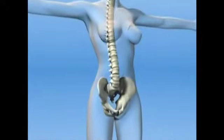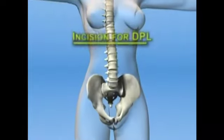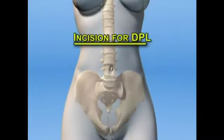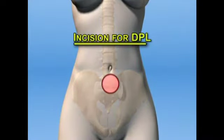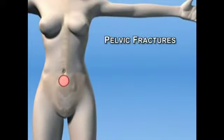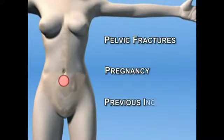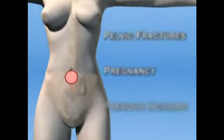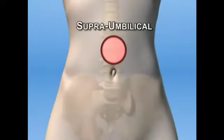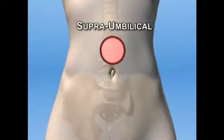The incision for a DPL is usually placed infra-umbilically. In the case of pelvic fractures, pregnancy, or previous lower midline incisions, a supra-umbilical incision may be used.